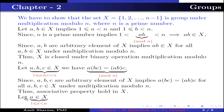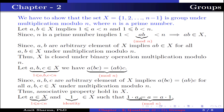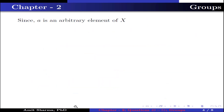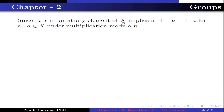Let a belong to X, where 1 ≤ a < n. There exists 1 in X such that 1·a = a = a·1 under multiplication modulo n. Here 1 is known as the identity. Since a is an arbitrary element of X, this implies a·1 = a = 1·a for all a in X under multiplication modulo n. Thus the identity exists in X.